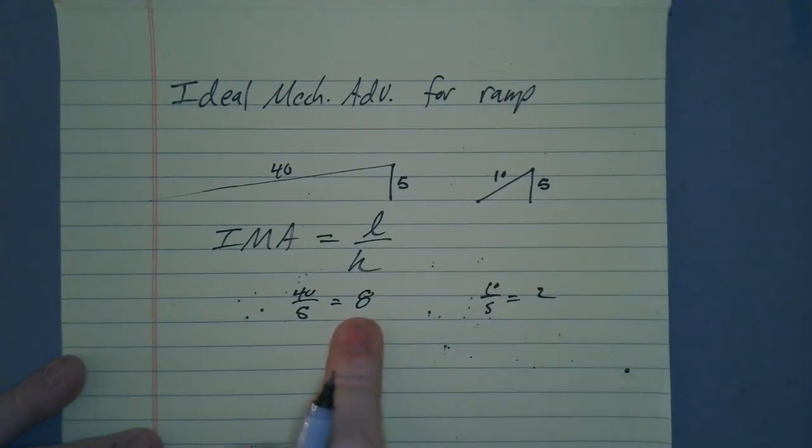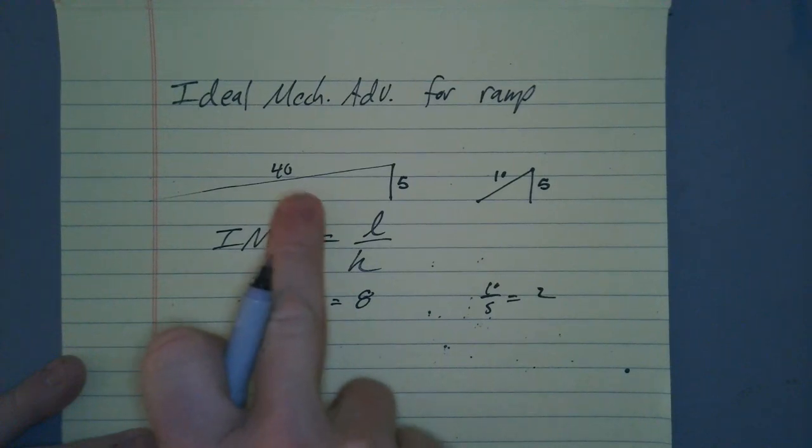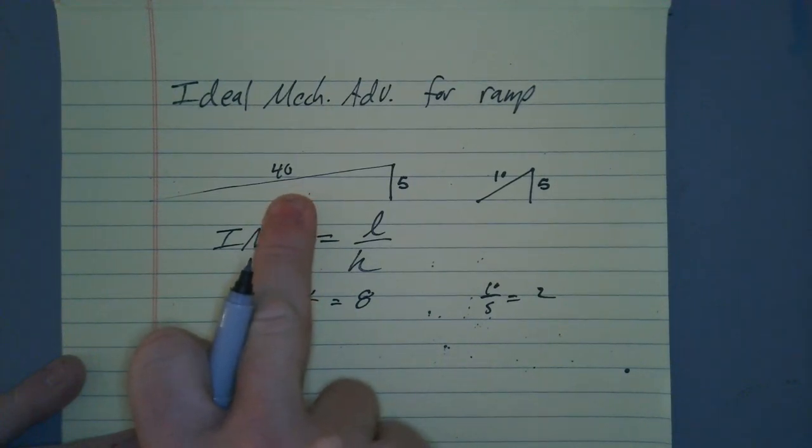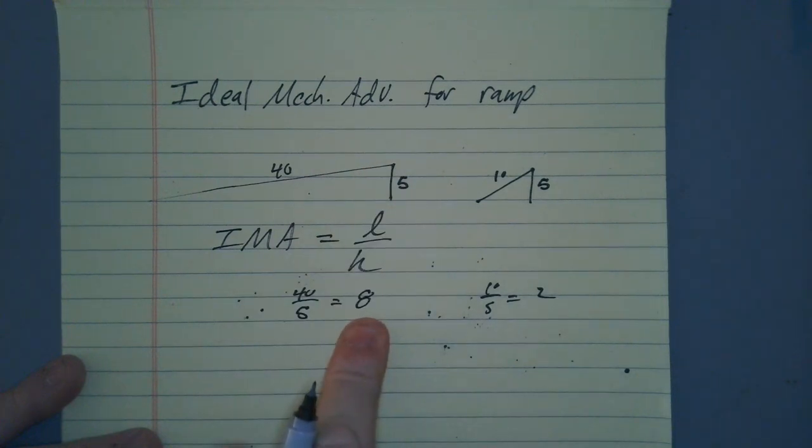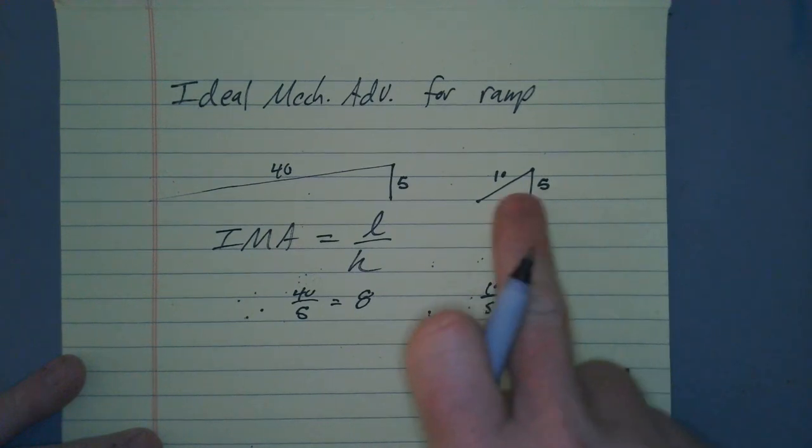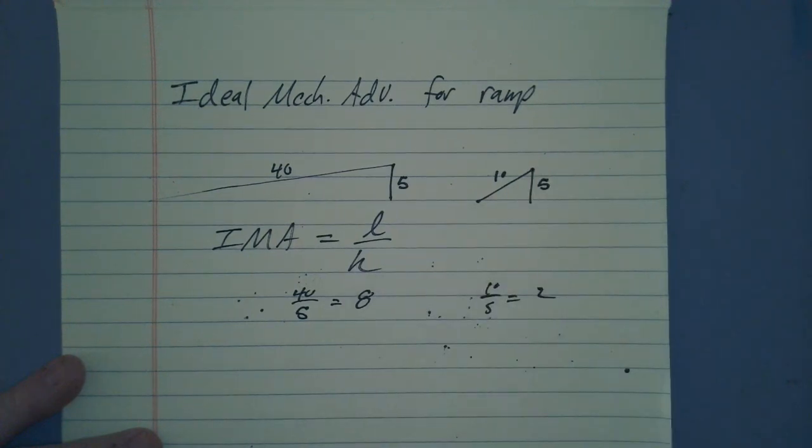So the numbers play out. It seems like this ramp is going to help me more. It's going to make the work easier because it's a longer, more gentle ramp. It has an ideal mechanical advantage of eight. This one still helps me, but it doesn't help me as much because the ramp is actually steeper.